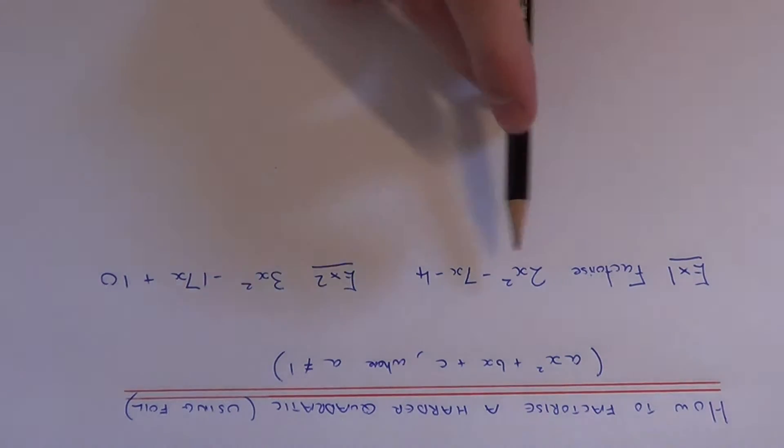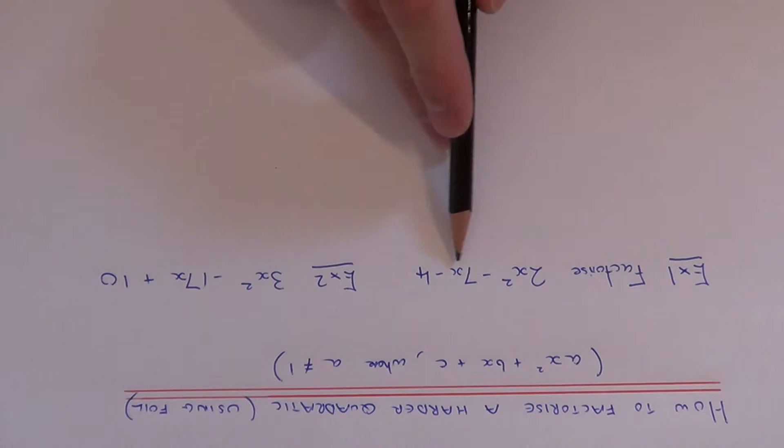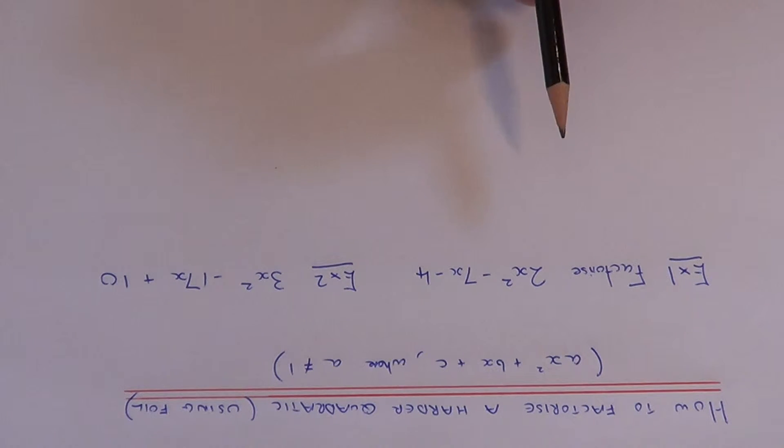Let's have a look at example 1. We need to factorise 2x squared minus 7x minus 4. We know that these types of expressions with three terms go into double brackets.